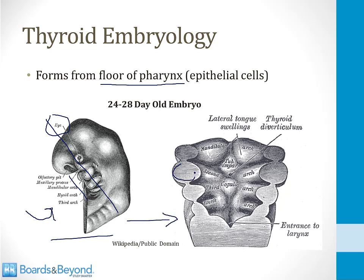Each bump is one of the pharyngeal arches, with pharyngeal grooves between each arch. In the middle are structures called the pharyngeal pouches. At the center of those pouches are two important structures: the corpula and the tuberculum impar. Right between them is a structure called the thyroid diverticulum — an outgrowth from the floor of the pharynx that will dive down into the neck to form the thyroid.